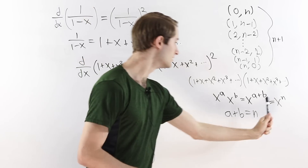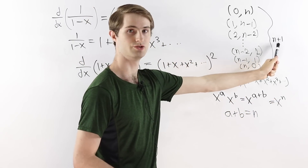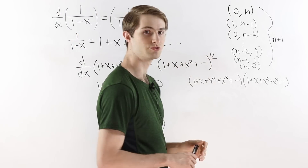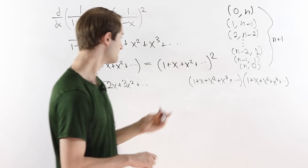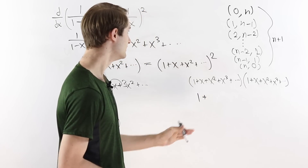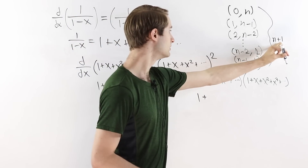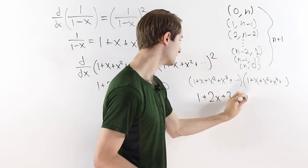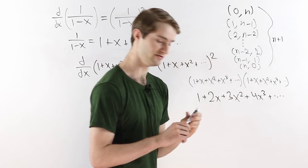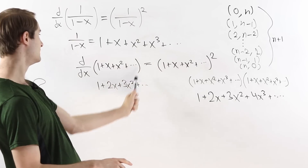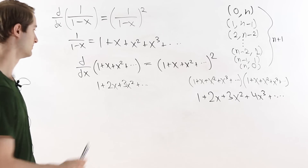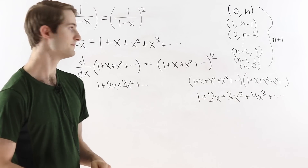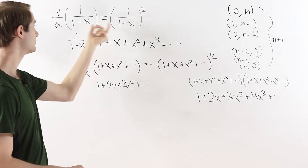The coefficient of x to the n in the product is therefore n plus 1. Writing this out: for n equals 0 we get 1 times x to the 0; for n equals 1 the coefficient is 2, giving 2x; for x squared the coefficient is 3, giving 3x squared; then 4x cubed, and so on. Comparing this to the derivative result, we see it's the exact same sum on both sides: 1 plus 2x plus 3x squared plus 4x cubed and so on to infinity.